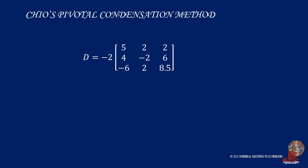With the new elements: 5, 2, 2 for the first row, followed by 4, negative 2, and 6 in the second, and negative 6, 2, and 8.5 in the third row. We use SARS rule and mirror the first two columns, then solve for the diagonals. Firstly, 5 times negative 2 times 8.5 is equal to negative 85. The second diagonal has 2 times 6 times negative 6, which is negative 72. 2 times 4 times 2 gives 16 for the third diagonal. The secondary diagonals have first negative 6 times negative 2 times 2, which is 24. The next has 2 times 6 times 5, which is 60. The last has 8.5 times 4 times 2, which is equal to 68.